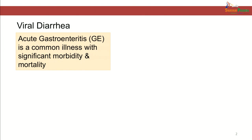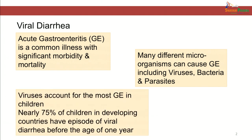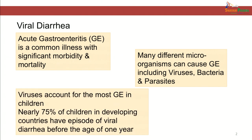Acute gastroenteritis is a common illness affecting infants, children and adults with significant morbidity and mortality. A number of different microorganisms can cause acute gastroenteritis like viruses, bacteria and parasites. However, viruses are the most important cause of acute gastroenteritis especially in children. Nearly 75 percent of the children in developing countries have an episode of viral diarrhea before the age of one year. Viral diarrhea is also an important cause of acute gastroenteritis in developed nations.